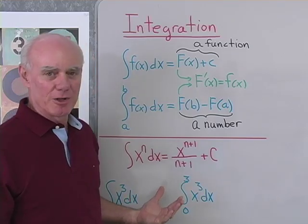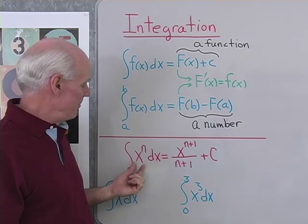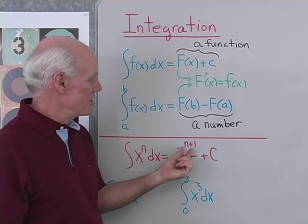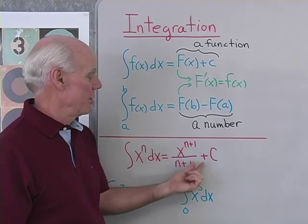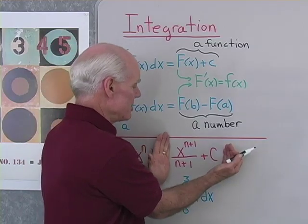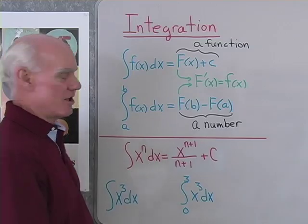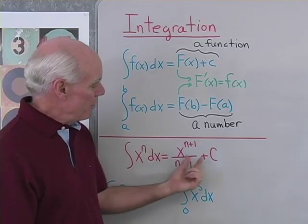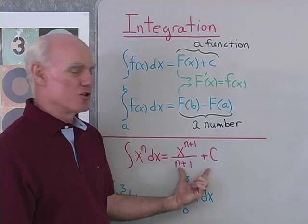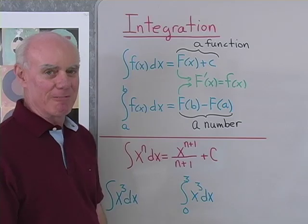We only have a couple of formulas to start with. The integral of x to the n dx is going to be x to the n plus 1, over n plus 1, plus c. Because if I take this and differentiate it, I end up with x to the nth. So I put the c on here so that I get all functions that are the antiderivative of this — a whole family of antiderivatives.